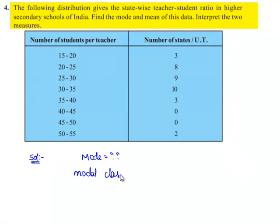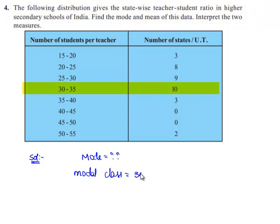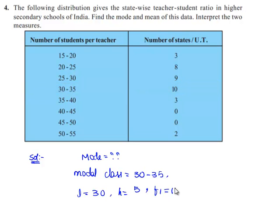The modal class is 30-35, where the lower limit L is 30 and the class size H is 5. The frequency of the modal class is F1 = 10, the preceding frequency is F0 = 9, and the succeeding frequency is F2 = 3.